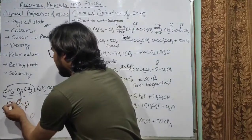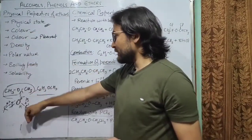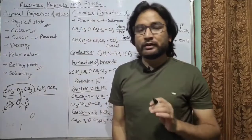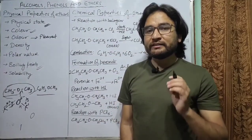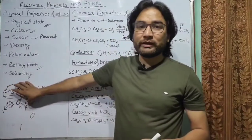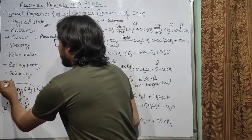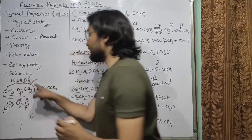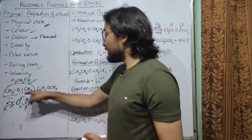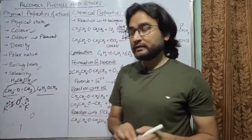Now if we talk about boiling points — boiling points of ethers are very important. The boiling points of ethers are quite low as compared to those of isomeric alcohols. Alcohols are functional isomers of ethers. For example, ethanol (CH3CH2OH) and dimethyl ether are isomers. Similarly, propanol can be compared with ethylmethyl ether. The boiling points of ethers are quite low as compared to the isomeric alcohols.